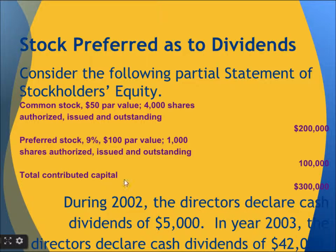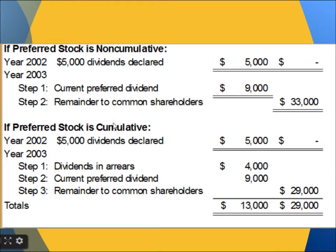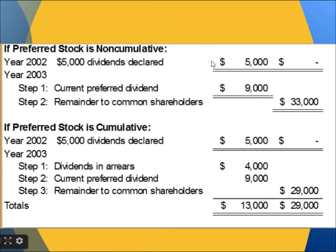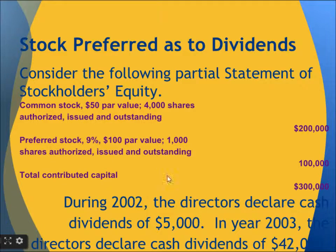The preferred stock was issued at 9%. There are two concepts: one is called non-cumulative and one is called cumulative stock. In case of non-cumulative, the percentage given for the preferred stock means that in case of issuance of a dividend, the first 9% of the preferred stock value will be given to the people who hold preferred stock.